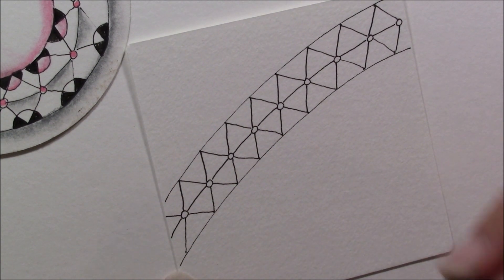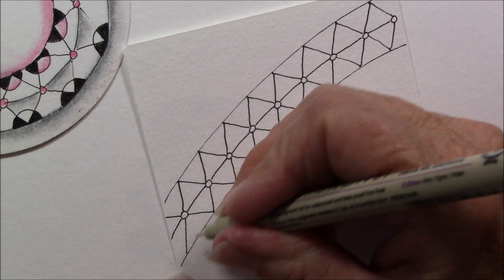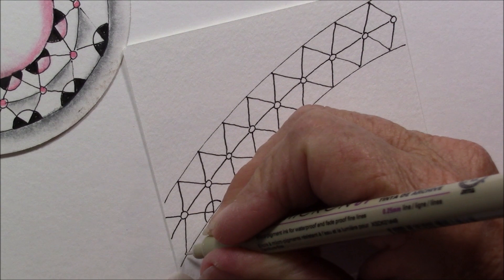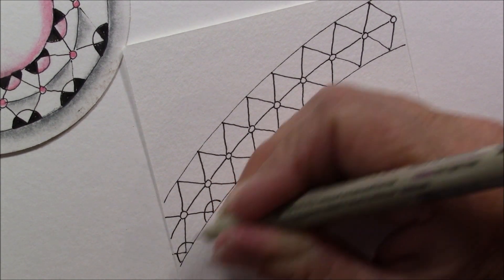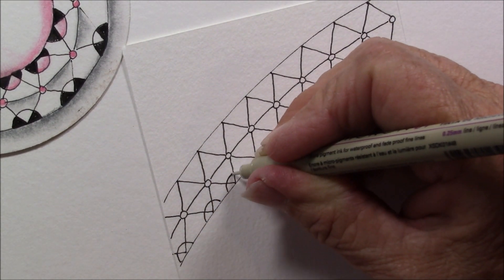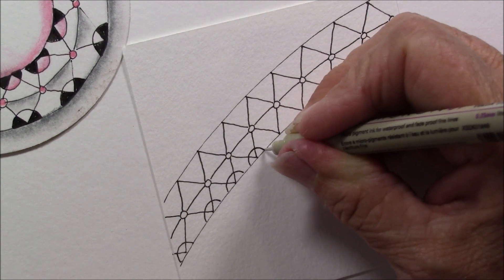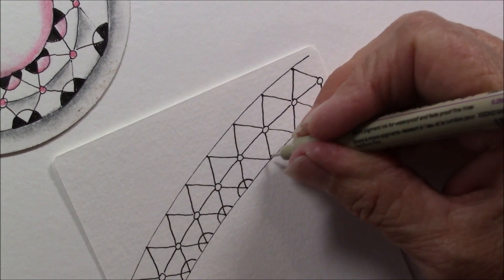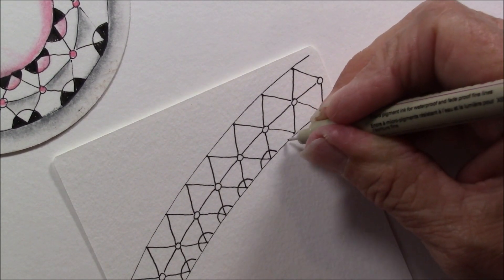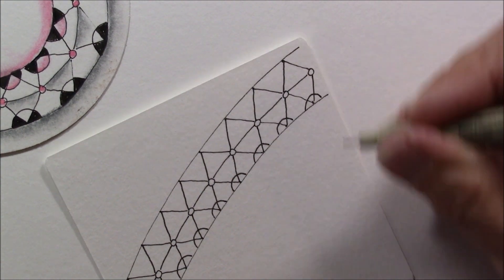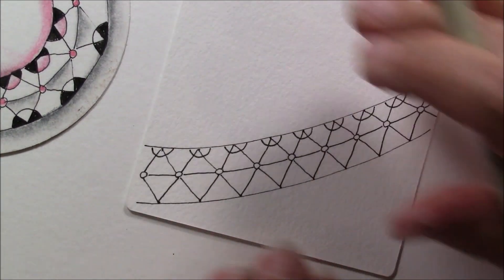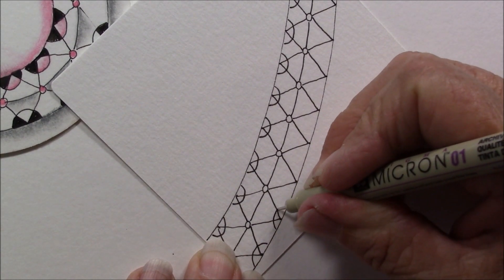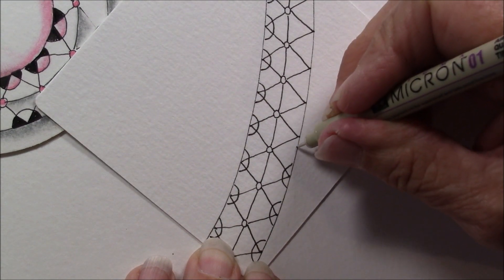And then our last step but not least is a little half circle over those triangular shapes. So I'm just going to put a half circle or a little crescent moon, I would call it, over each one of these little points. I find it easier if I turn it around. So I'm doing it up both edges.